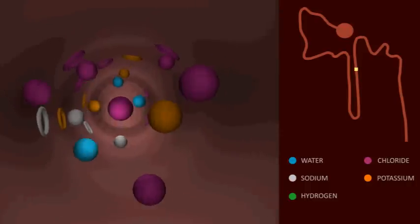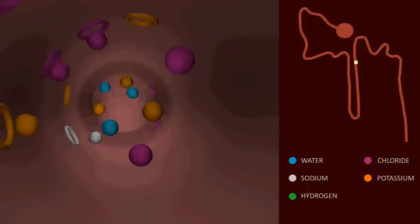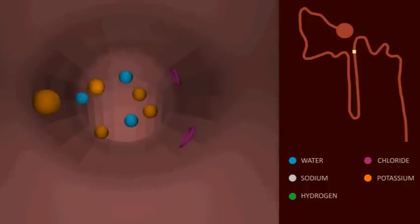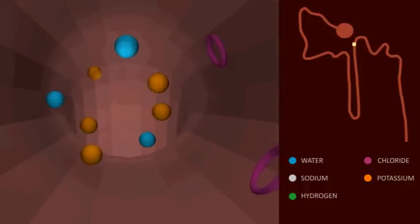sodium, potassium and chloride are transported from the luminal fluid into the cell via the co-transporter in a ratio of 1 to 1 to 2.